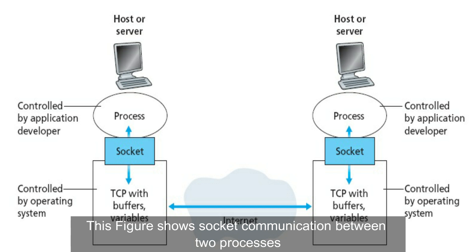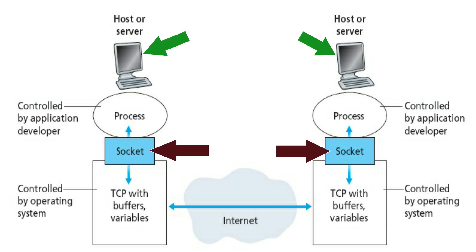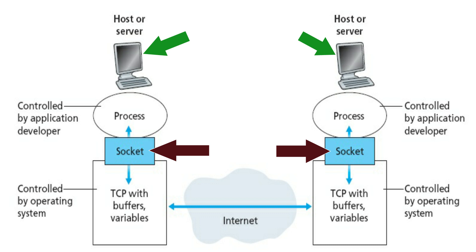This figure shows socket communication between two processes communicating over the internet, assuming the underlying transport protocol uses TCP (Transmission Control Protocol). As shown, we have two communicating hosts, and a socket is the interface between the application layer and the transport layer within the host. The application developer has control of everything on the application layer side of the socket but has little control of the transport layer side.